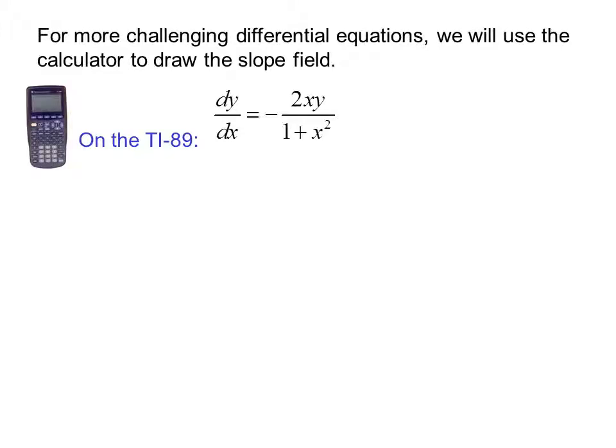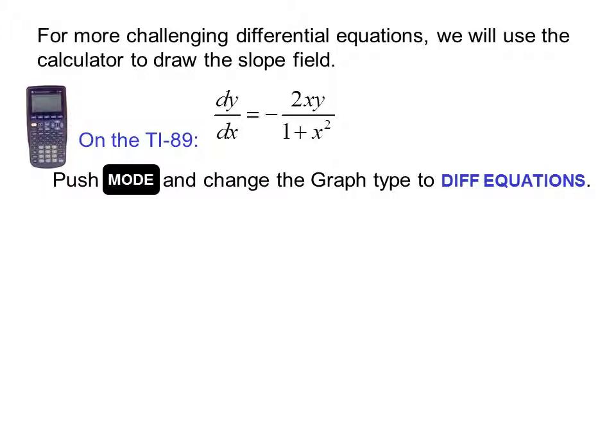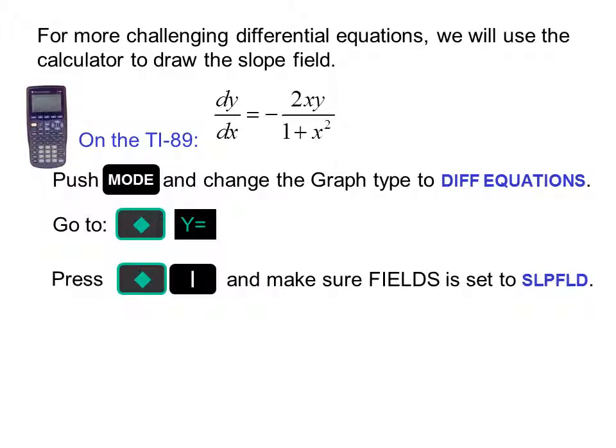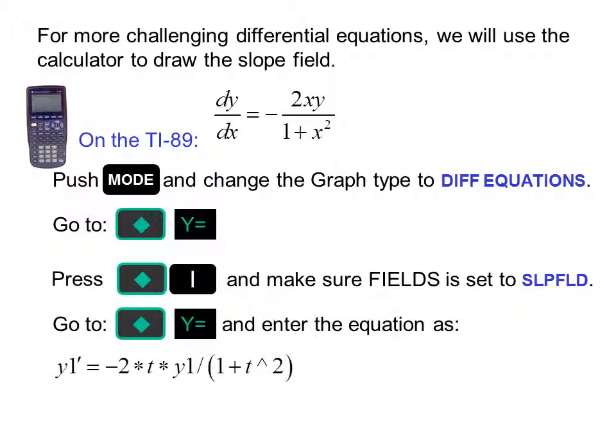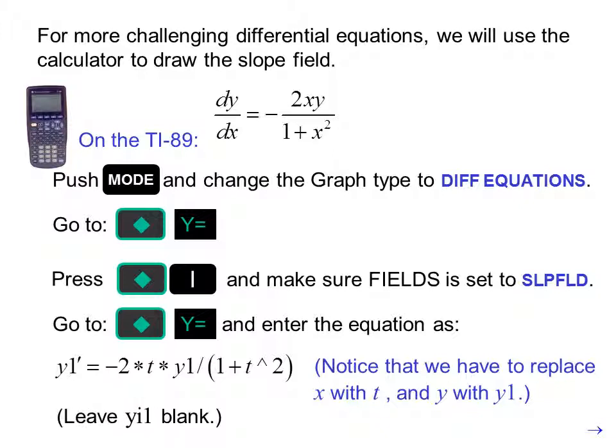On the TI-89, push mode and change the graph type to differential equations. Go to diamond y equals. Press diamond vertical bar and make sure fields is set to slope field. Once you've done that once, it should stay that way. Now go to diamond y equal and enter the equation as y1 prime equals negative 2 times t times y1 divided by parentheses 1 plus t to the second. Notice that we have to replace x with t and y with y1.